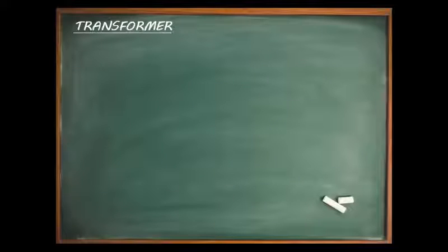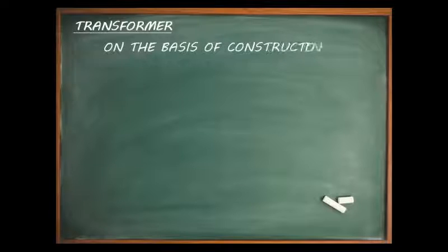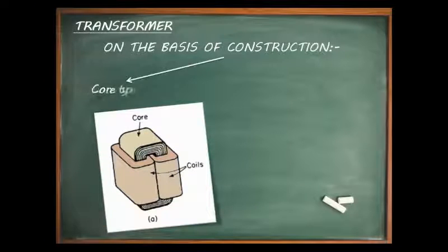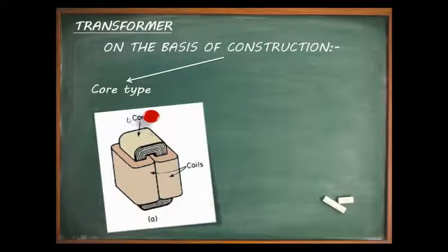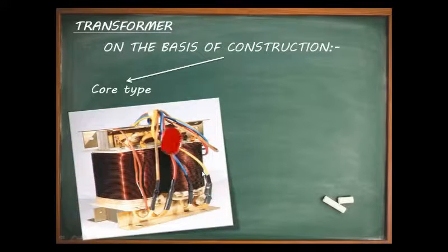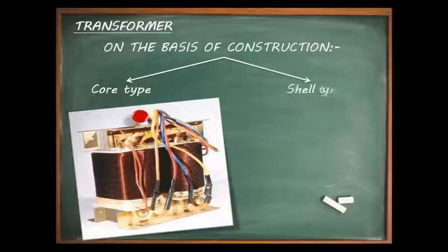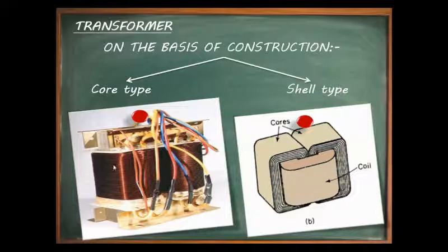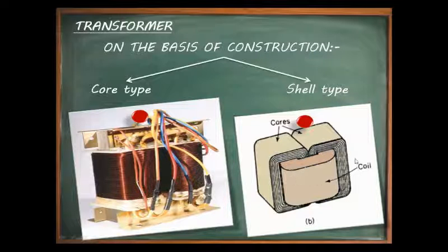Now we will discuss the classification of transformers. Transformers are classified in a number of ways. The first is on the basis of construction. In the core type transformer, the winding encircles the core. In the shell type transformer, the core encircles the winding or coils.